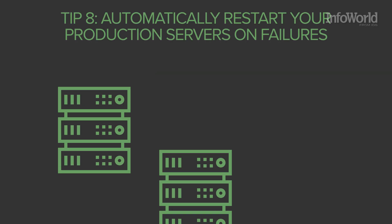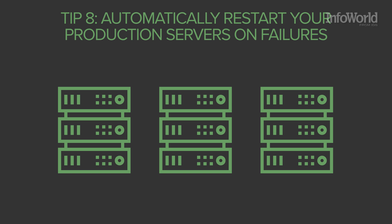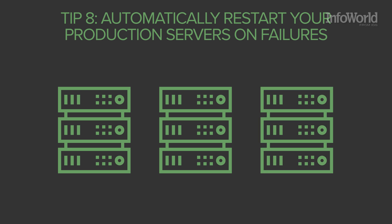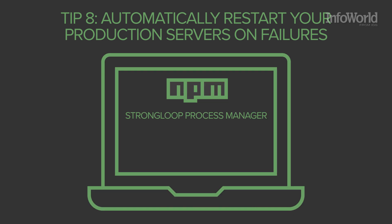Run your production servers like cattle, not like pets. If a server goes down, you should have a process manager in place to kill it and start a new instance. Common examples include the StrongLoop Process Manager, PM2, and the forever and forever-monitor NPM packages.